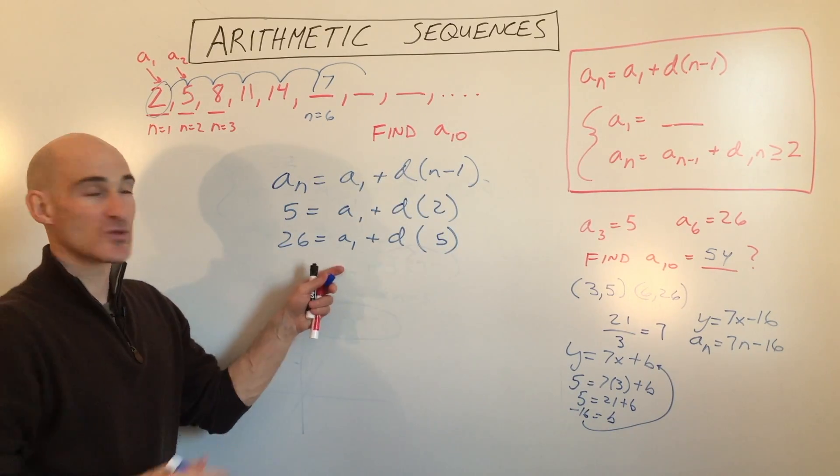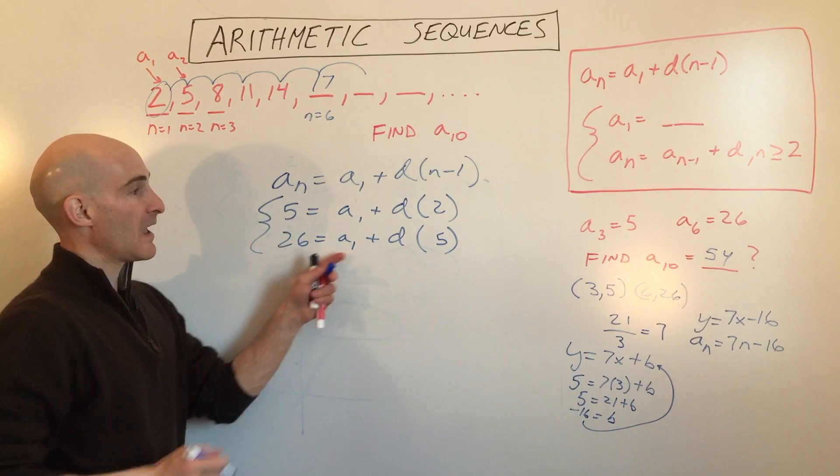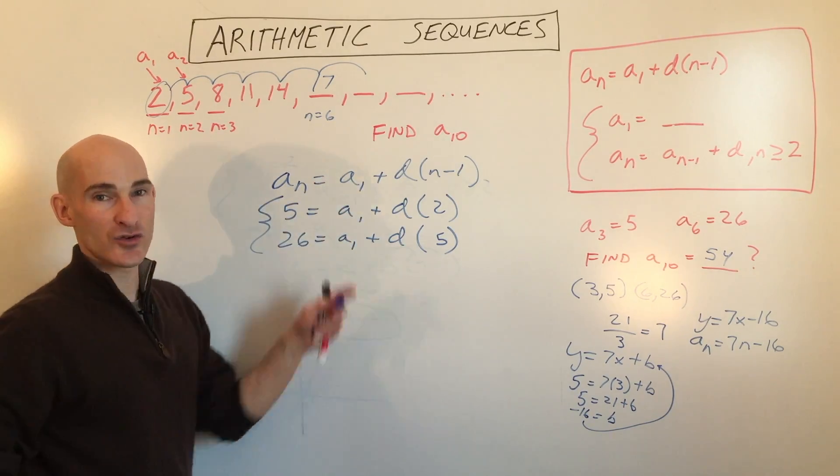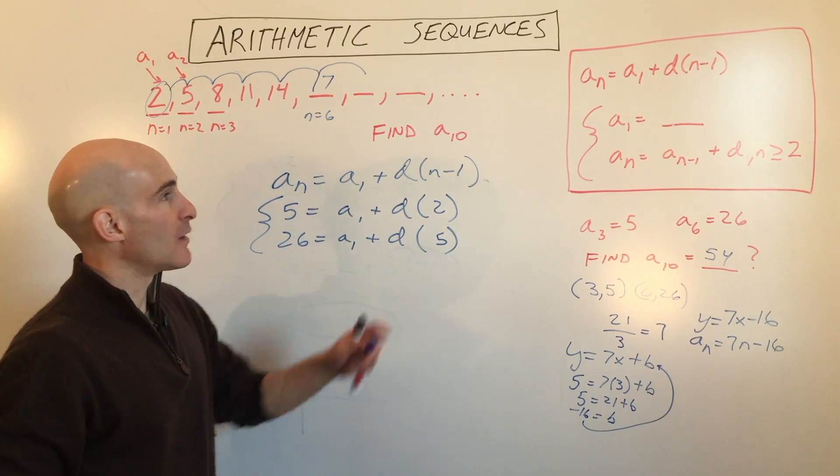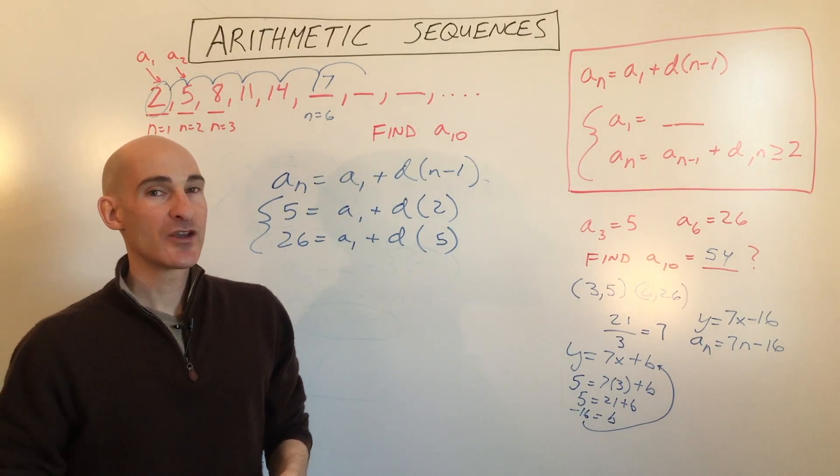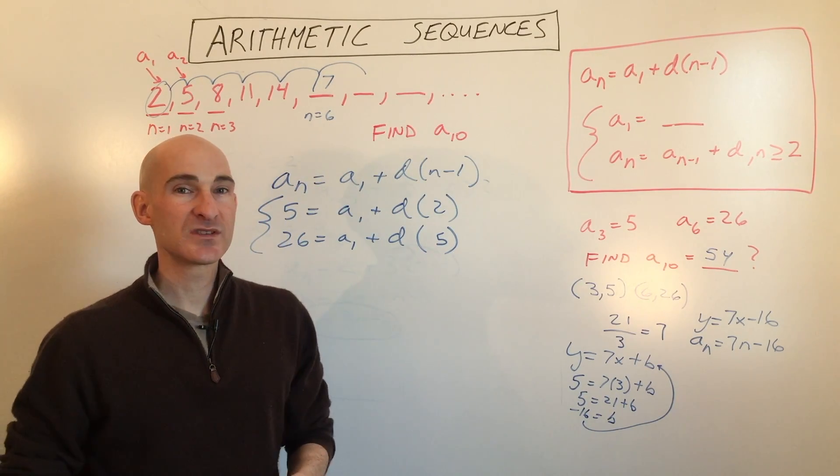And so now what you can see is we have a system of equations, and we can solve for a1 and d by subtracting or doing the substitution method. Then we can go ahead and put those back in, and we'll have an explicit formula to find any term. So this is how you work with arithmetic sequences.